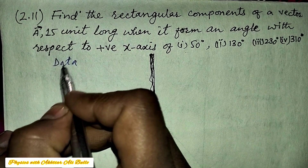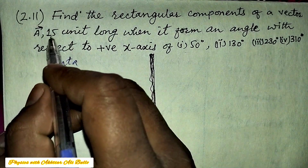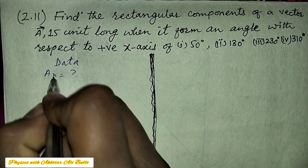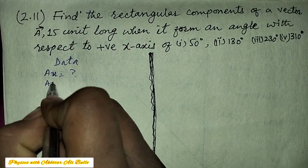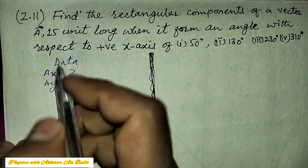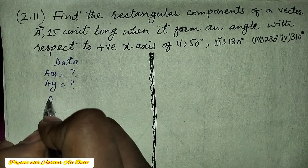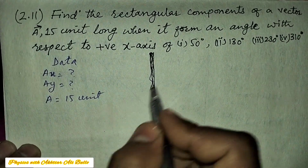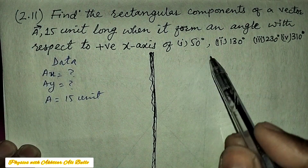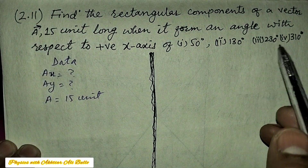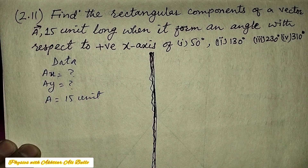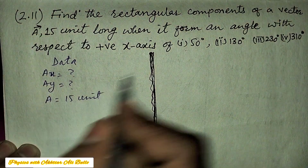First, we will set up the data. We have to find the rectangular components Ax and Ay. The magnitude of A is given as 15 units, and the angles are given as 50°, 130°, 230°, and 310°. We need to find the X and Y components at each angle.